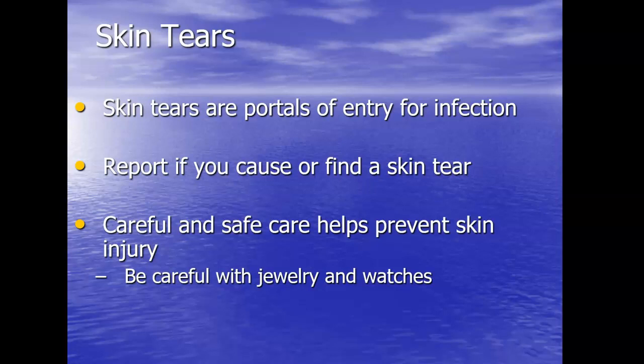One reason we tell you no jewelry in facilities is that a ring with a big diamond or a watch with a lot of gauges can easily poke or cause a tear in a resident's fragile skin when you're tucking sheets or lifting them. We also require very short nails — no artificial nails, no gel nails. When you hold your hand up, you should not see your nails over your fingers. Their skin is very fragile, and especially if they don't have good circulation, it's not going to heal quickly. If we accidentally cause a skin tear, make sure we report it.